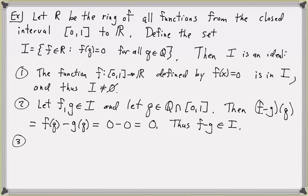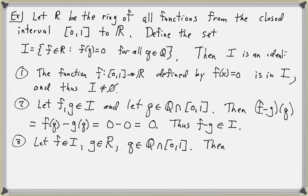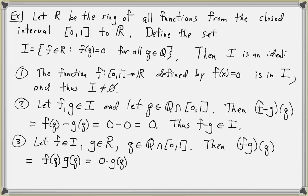Finally, let f be in I and let g be an arbitrary function in the ring R. For any rational number q in [0,1], (f·g)(q) = f(q)·g(q) = 0·g(q) = 0. Thus f·g is in I. Since this ring is commutative, we don't need to check g·f separately. This shows that I is an ideal of R.